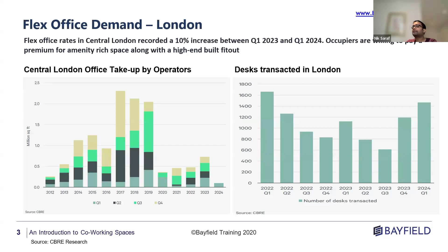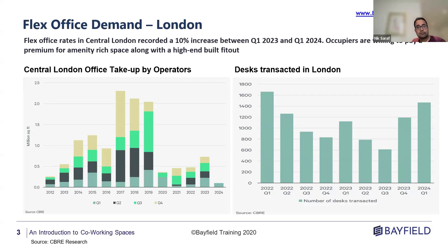On flex office demand in London: this is quite an interesting chart. Flex office rates in London have gone up by 10% in the last year. Businesses are willing to pay a premium for co-working spaces that offer a very good spectrum of amenities and high-specification fit-outs. As you can see from the chart on the right, the number of transactions is increasing quarter on quarter every year.